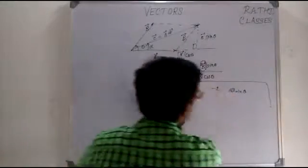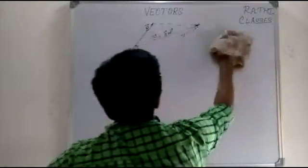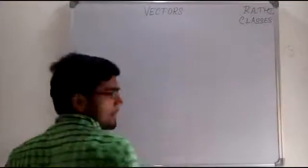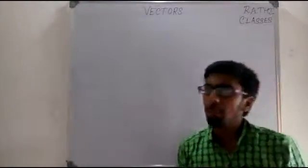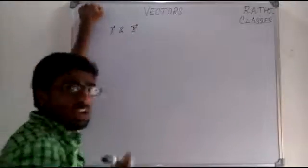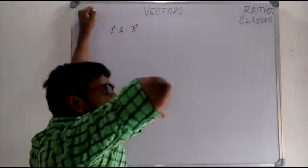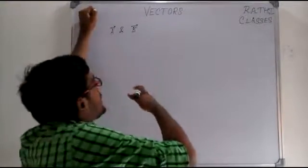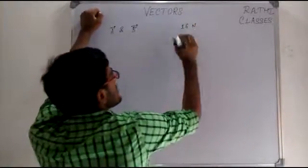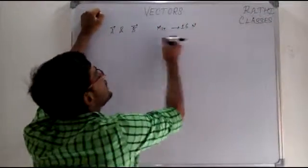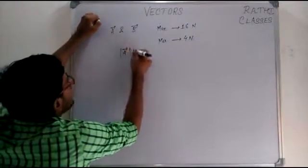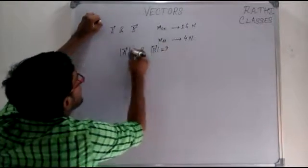Taking a few examples to learn how we apply these results: if it is said that there are two vectors A and B, and the maximum resultant between them is 16 newtons and the minimum resultant is 4 newtons, we are asked to find the magnitudes of vectors A and B.